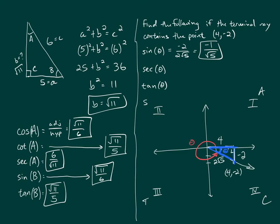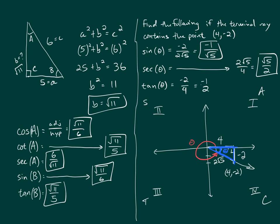Secant of theta is hypotenuse over adjacent: 2√5 over 4, which reduces to √5/2. That value is positive, consistent with the fourth quadrant rule where cosine and secant are positive. Tangent of theta is opposite over adjacent: negative 2 over 4, reduced to negative 1/2. That's also consistent — in quadrant four, tangent is negative.